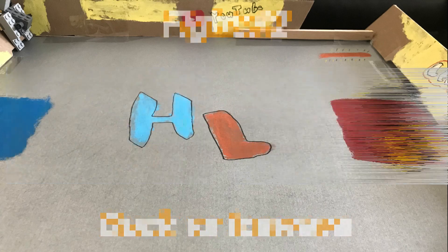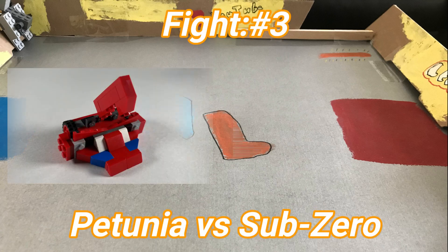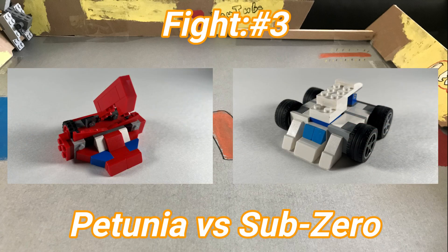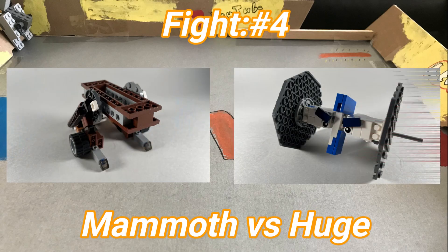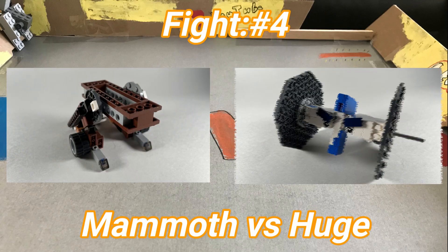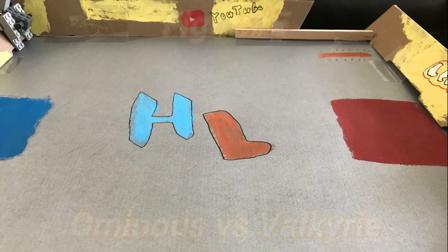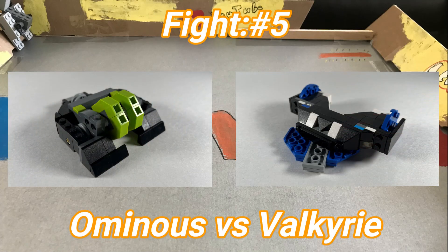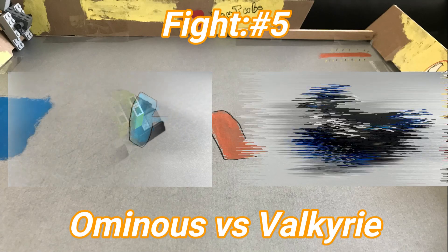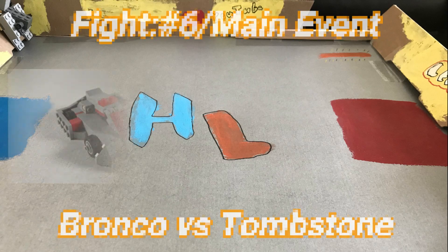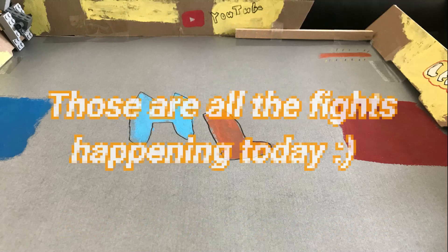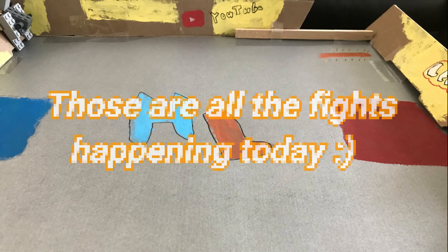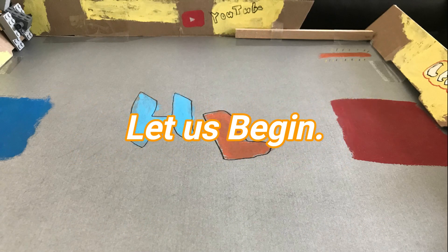Our third match has Petunia taking on Sub-Zero. Our fourth has the big old Mammoth taking on the big old Huge. Our fifth fight is Ominous taking on the great Valkyrie, and our main event is the flipper Bronco taking on the deadly Tombstone. Those are all the fights happening today. I hope you enjoyed today's episode.